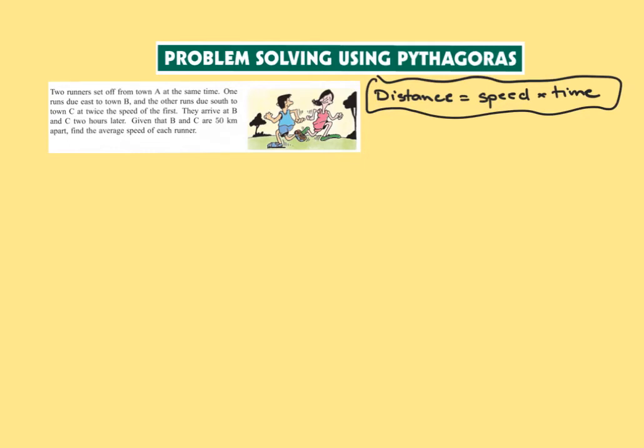Hi everyone and welcome, my name is Shaha and we're going to do another problem solving using Pythagoras theorem. So what do we have here? The question says two runners set off from town A at the same time.